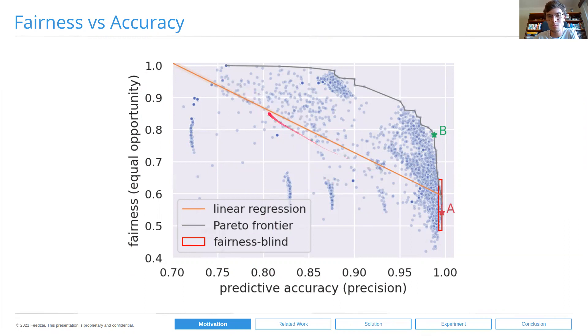First of all, there's a clear trade-off between fairness and accuracy. The most accurate methods are bound to have lower fairness, and the most fair models will have lower predictive accuracy. The second insight is that the trade-off is not linear. With a short decrease in predictive accuracy, we can actually achieve steep increases in the fairness metric.